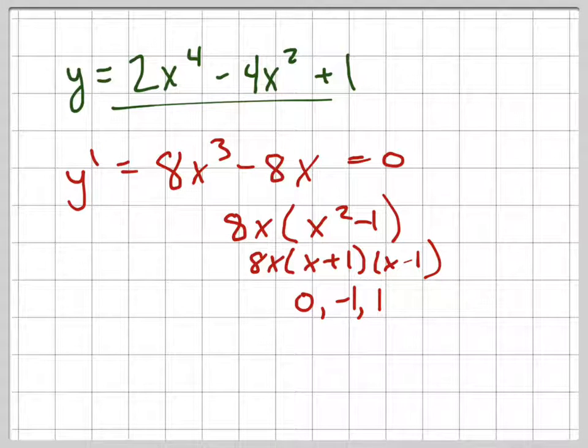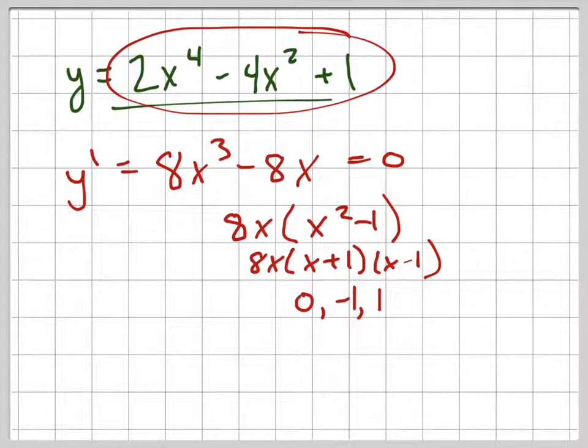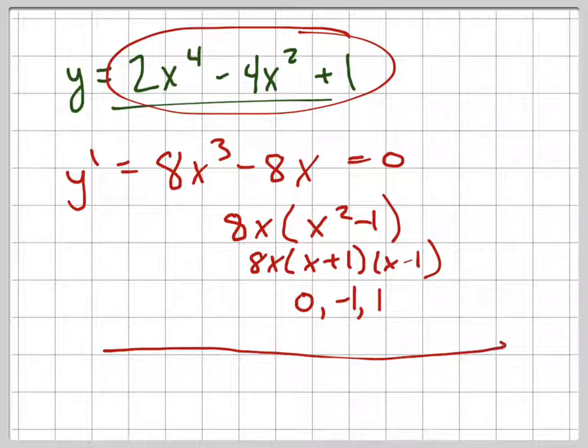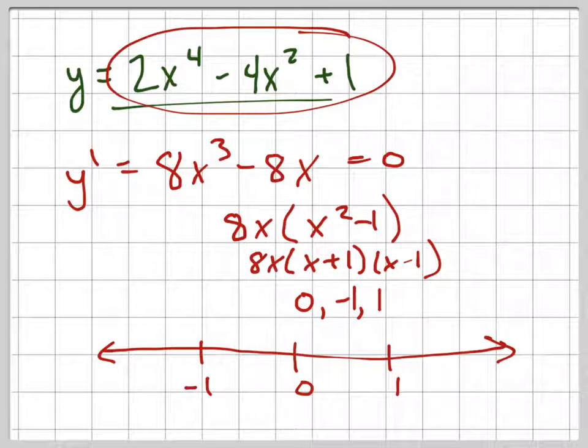So those are my, I'm sorry, those are my maxes and mins of my original graph. And now let's set up a little sign analysis here. Here's negative 1, here's 0, and here's positive 1. We'll plug in values between here and see what's happening. Because we know these are maxes and mins of my original function. So let's plug in values to the left.